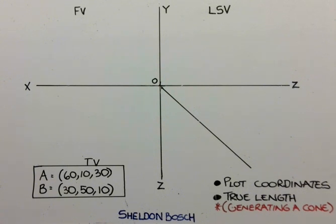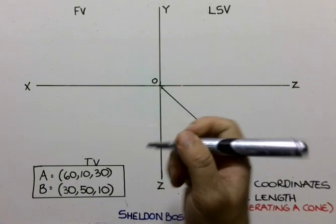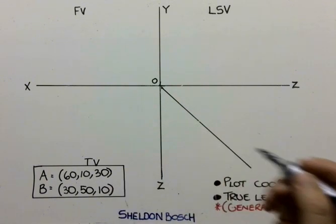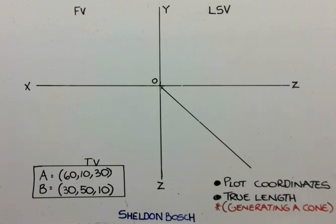And we're going to be plotting these coordinates and we're going to find the true length of the lines. Remember we spoke about having two dots that are joined to one another, providing us a line, and this is the line that we need to find the true length of. So let's look at the actual coordinates. The coordinates of A in this case, remember we are going to be dealing with an OX, an OY, and an OZ coordinate.